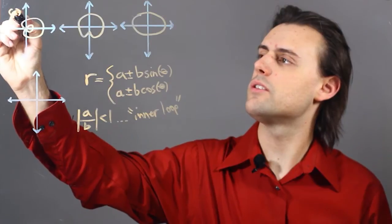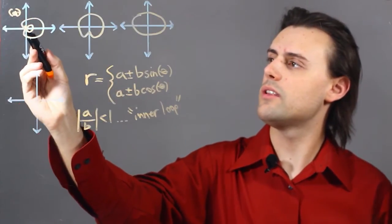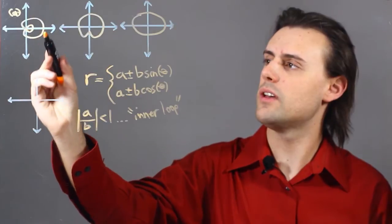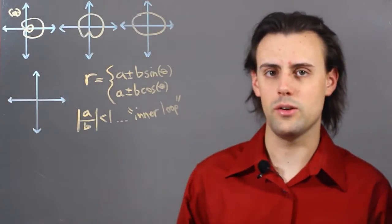So if I consider that my case a, I notice that there is an inner loop inside of this Limasson, and there are two crossings at the origin.